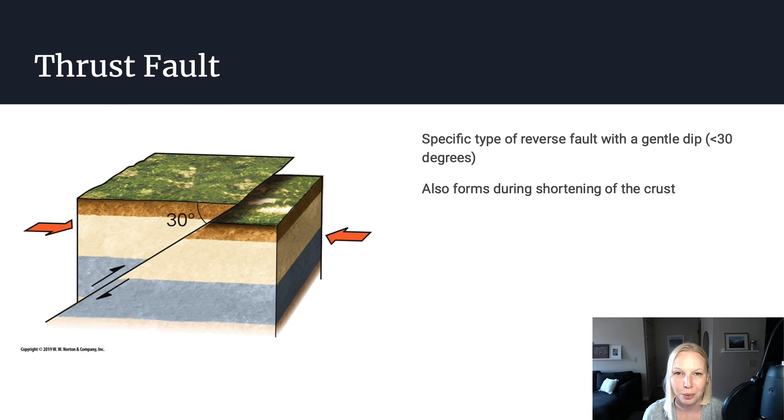The third type of fault I want to talk about is called a thrust fault. These are very similar to reverse faults. The only difference is that thrust faults have a very shallow dip of only about 30 degrees. Thrust faults also form during shortening of the crust. So in scenarios where you have compression or convergence and shortening occurring in the crust, you'll form these shallowly dipping thrust faults.